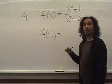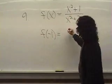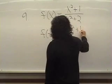So this is what I call a plug-in choke problem. We just need to plug in minus 1 for our x.